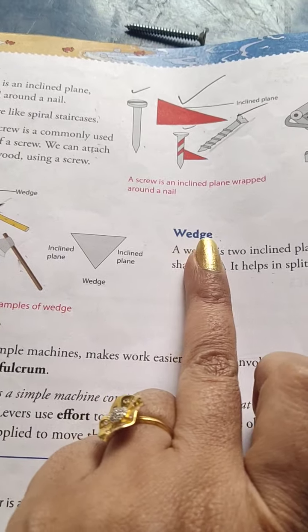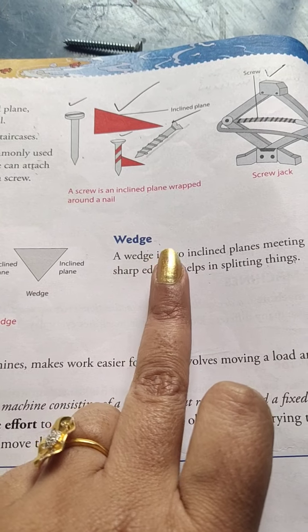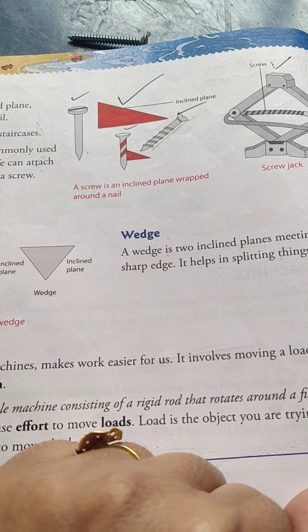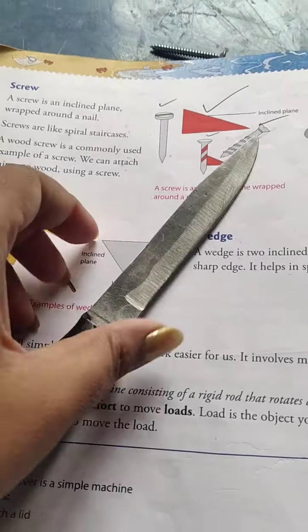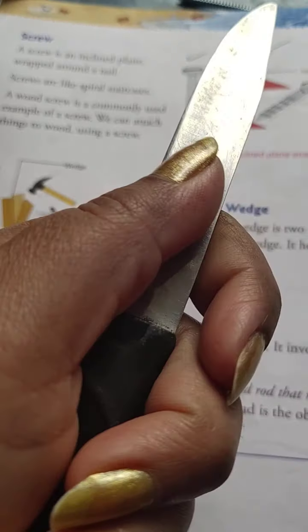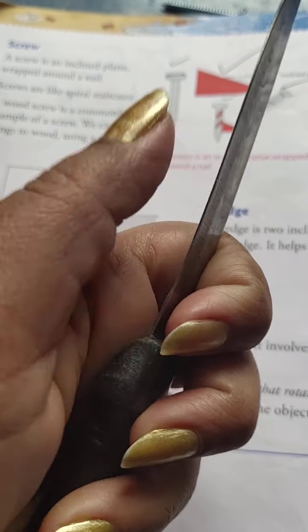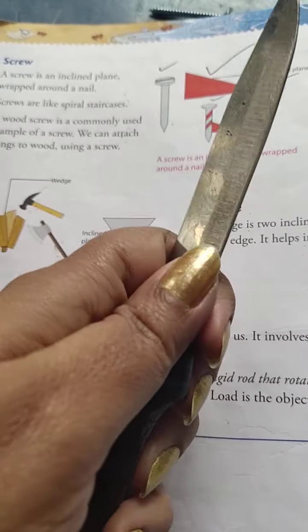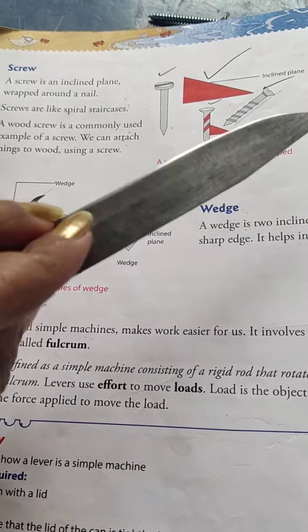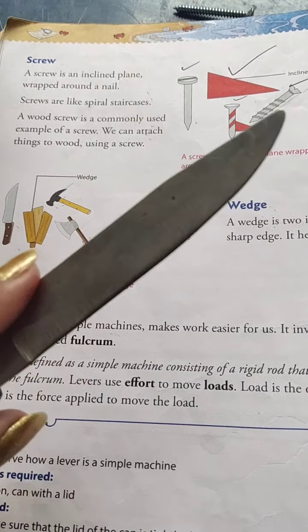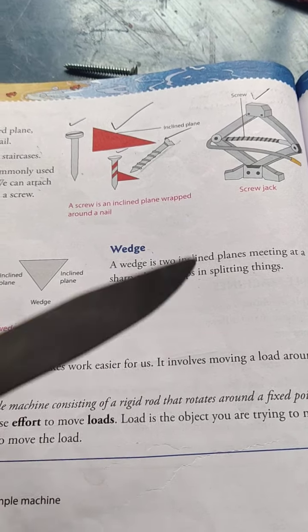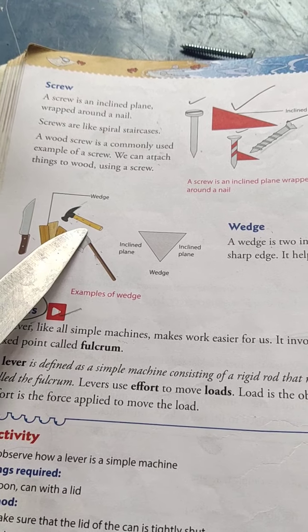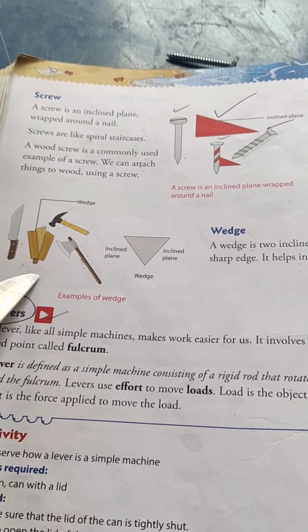Next, we have the wedge. A wedge is two inclined planes meeting at a sharp edge — very sharp things like a blade or a knife. When two inclined planes are joined at a sharp edge, this becomes a wedge. Wedges are generally used for splitting or cutting things — like an axe, a knife, or a hammer — these are all examples of a wedge.